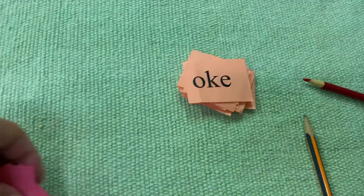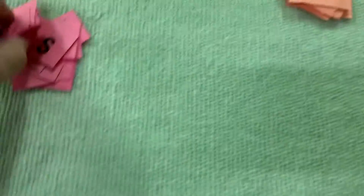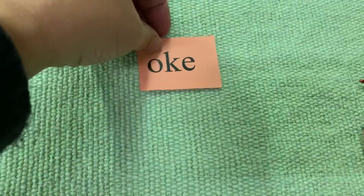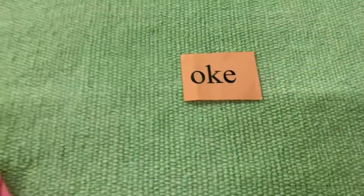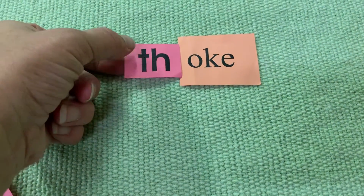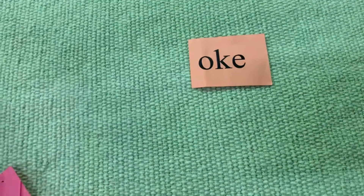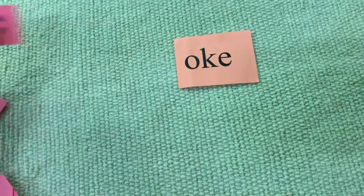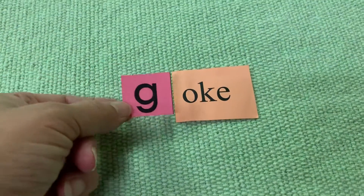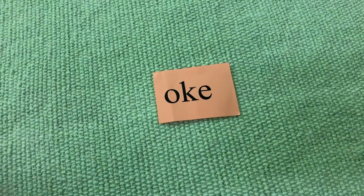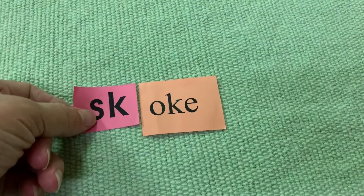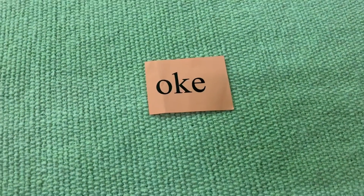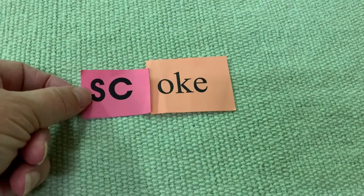The fun thing about this is that it makes a million — you can just go for it. So here's 'Oak' and now it says 'Thoak.' Now it says 'Doak.' Now it says 'Coke' — that's a real word, that's a sort of pop. 'Goke.' 'Skoke.' Here's a real word too: 'Woke.' 'Skoke' again.